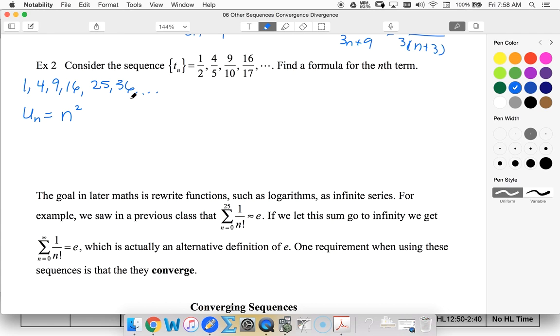Looking at the next row, I would have a difference of 2 between every term. So notice here that I've got in the denominator, all of these values are 1 more than the numerator.